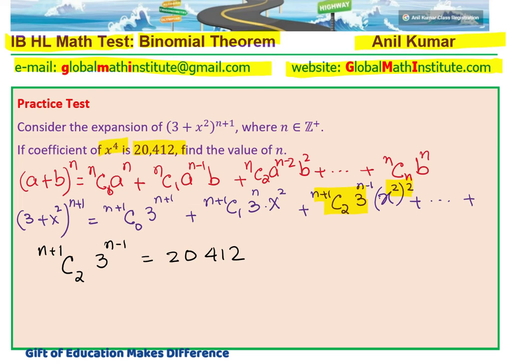So, we can write down that (n+1)C2·3^(n-1) should be equal to 20,412. Make sense? You see that, how simple it is. Once we know this, we can actually calculate the value of n. Now, the difficulty here is that we need to do this without calculating.